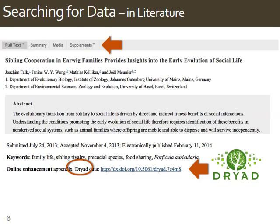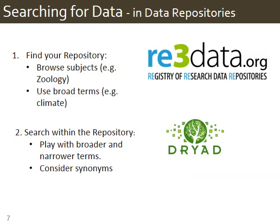A second way to find data is to look in data repositories. If you don't know which data repository to look in, there are directories for this. Re3Data is an example — it's freely available on the web. You can search here to find data repositories that match your subject area. A search in Re3Data searches for your keywords in the descriptions of the data repositories, but it does not search for your keywords in the descriptions of the data sets within that repository.